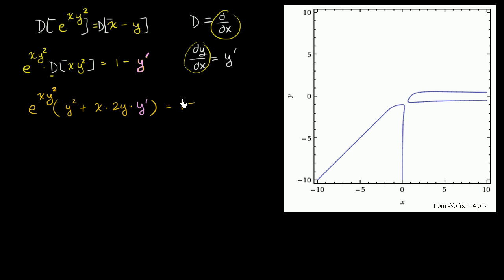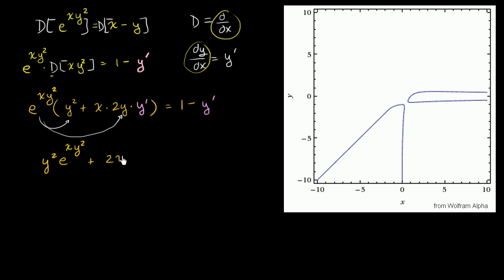That's going to be equal to 1 minus y prime. Now, like we've been doing, we have to solve for y prime. Let's distribute the exponential — e to the xy squared — and we get y squared times e to the xy squared, plus 2xy e to the xy squared times y prime, which is equal to 1 minus y prime. Now let's get all of our y primes on one side.